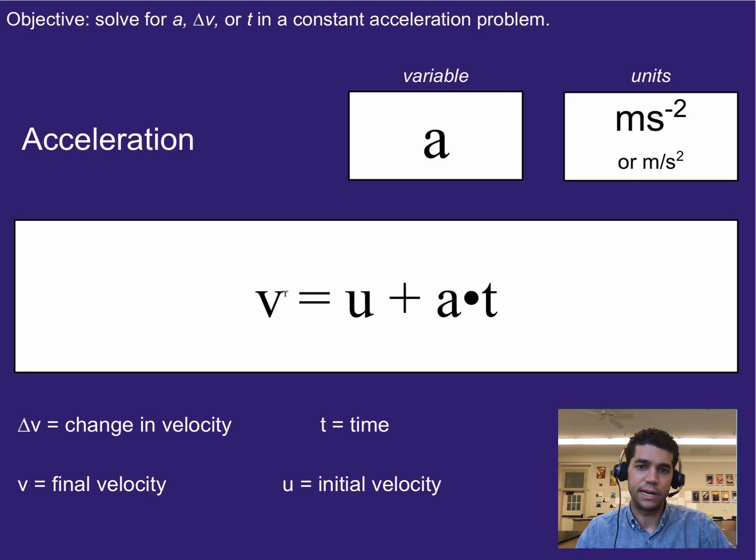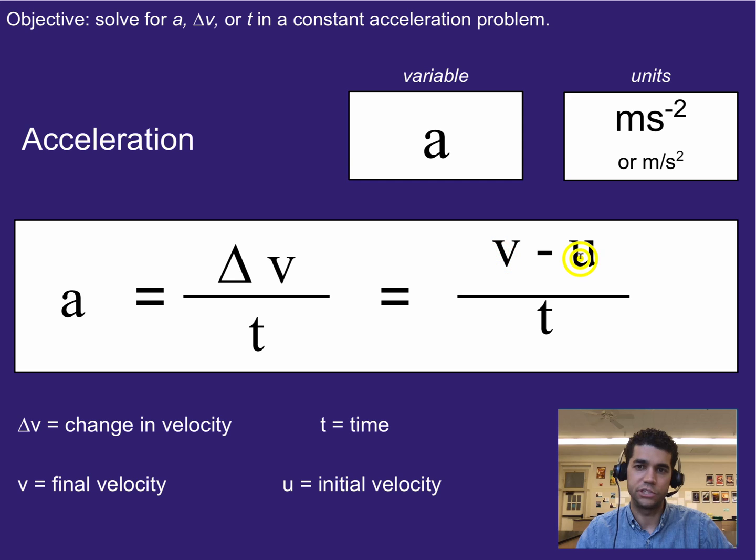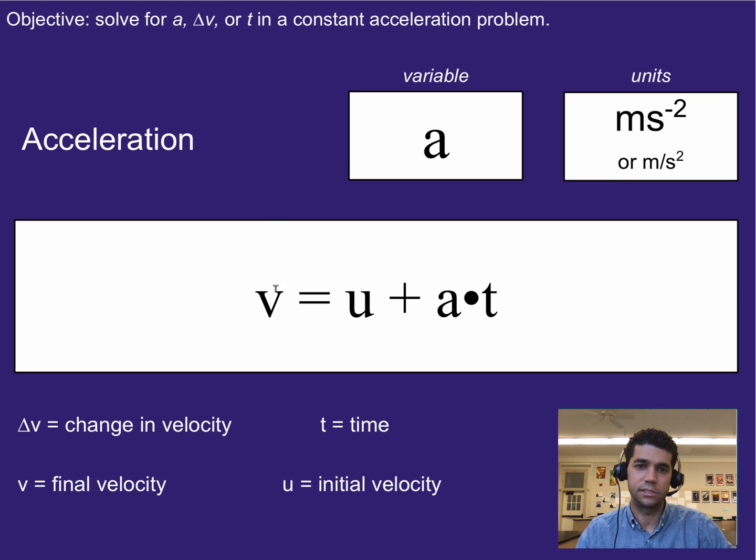Now we can rewrite our equation. So if we go back to acceleration equals change in velocity, so final minus initial over time, we can rewrite that by pulling time over here to this side, and then moving the u to the other side as well. And what that looks like is this, where we get final velocity equals initial velocity plus acceleration times time.